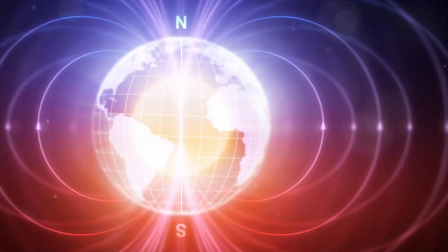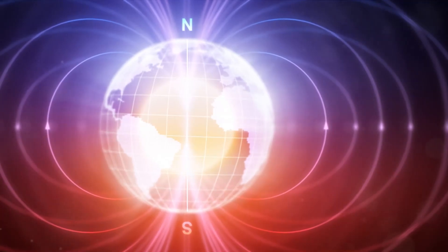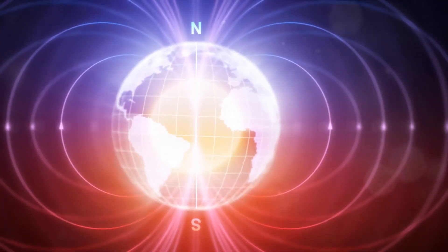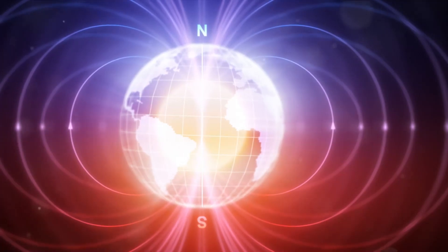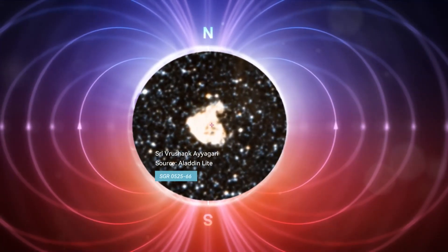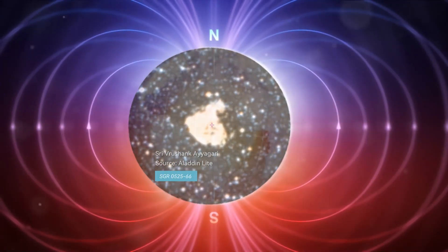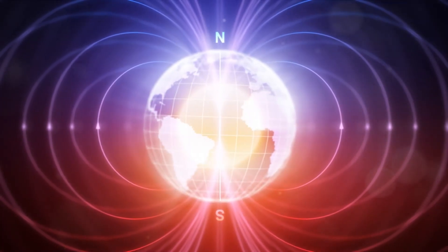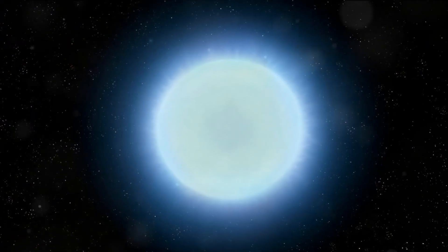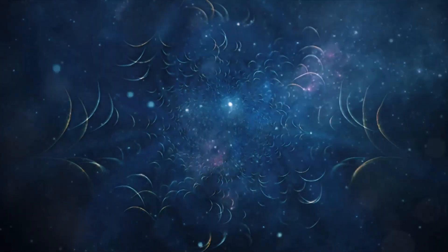Among these mysteries were these magnetars with their incredibly powerful magnetic fields. The first observation of a magnetar, SGR0525-66, occurred in 1979. This discovery was a game-changer, opening up a new chapter in our understanding of the cosmos.